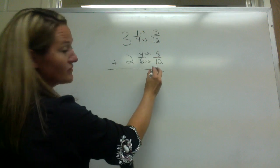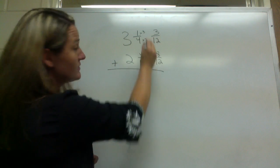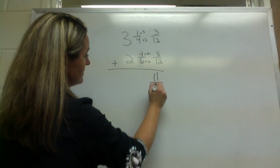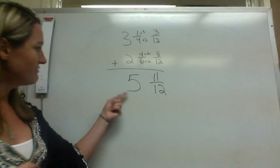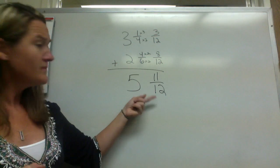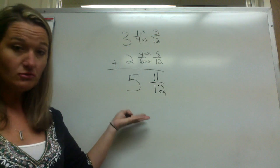So now we've got common denominators. We're just going to add three plus eight, eleven, over twelve. Three plus two, five. So we have five and eleven twelfths. This is not an improper fraction, so we can just leave it alone.